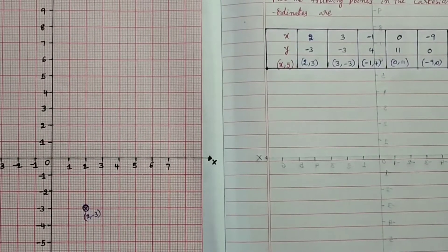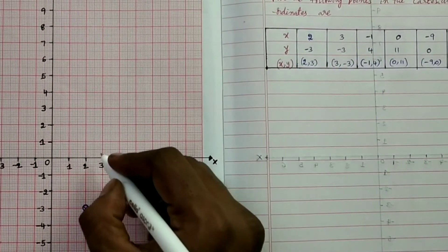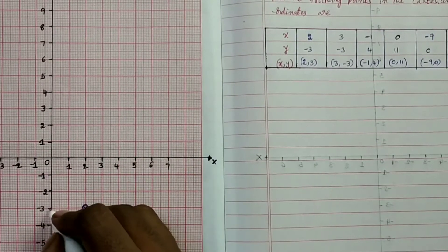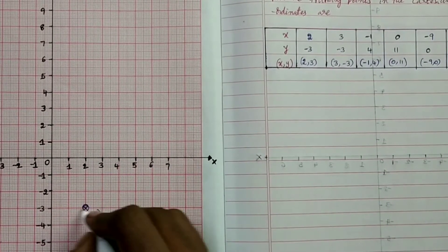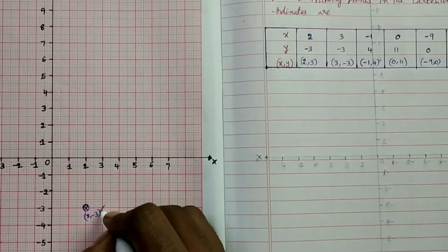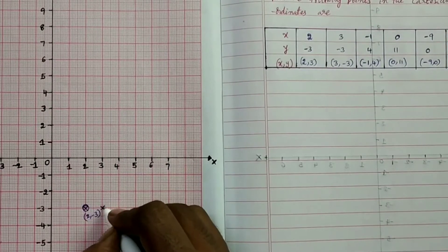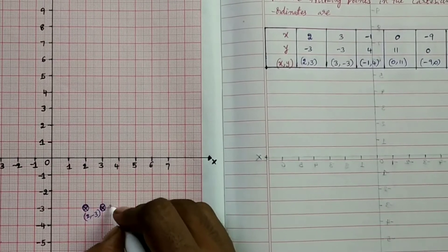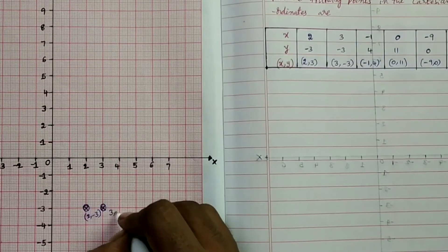The second point is (3, -3). So on the x-axis is 3 and y-axis is -3. So this point represents (3, -3).